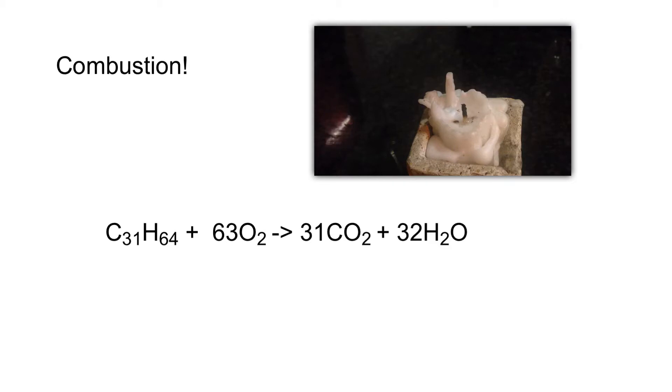If you take a look at the formula C31H64, that makes sense because alkanes have the general formula CnH2n+2, where n is the number of carbons. This confirms it's a straight chain alkane.